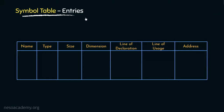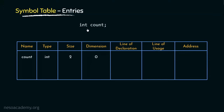Let me show you how entries are stored inside the symbol table with a proper illustration. Consider the statement where variable count is being declared as an integer. The name attribute will hold 'count', the type attribute will hold 'int', and if the platform specifies integer size as two bytes, the size attribute will hold the value two. Since this is a primitive data type, the dimension will be zero. Since we don't have the full source code, the line of declaration, line of usage, and address attributes are kept blank for now.